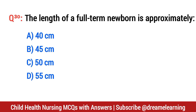Question number 30. The length of a full-term newborn is approximately? The right option is C: 50 cm.